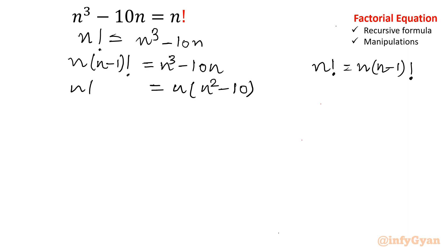Left hand side you are having n and (n-1)!. Now we can cancel one n from both sides. So the equation will convert into (n-1)! equal to n² - 10.